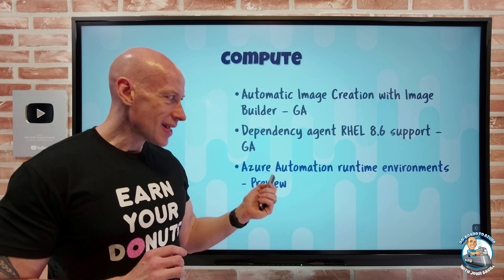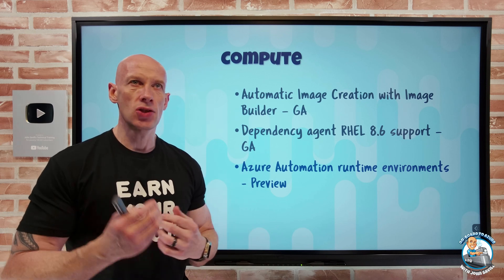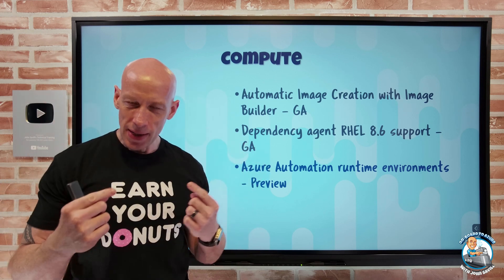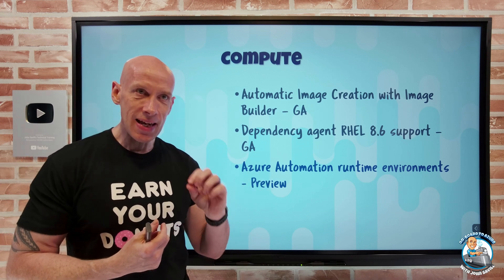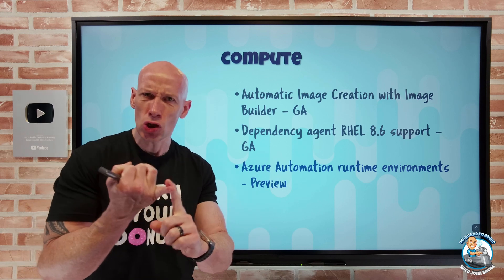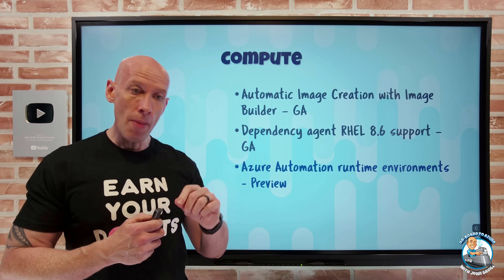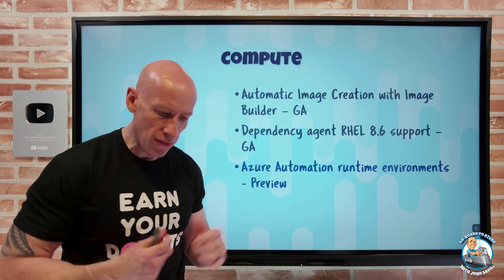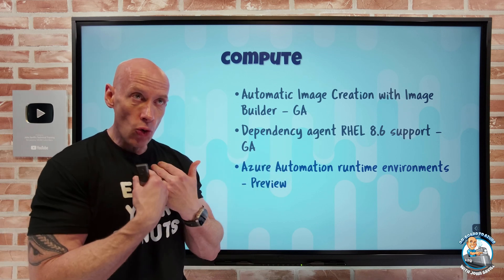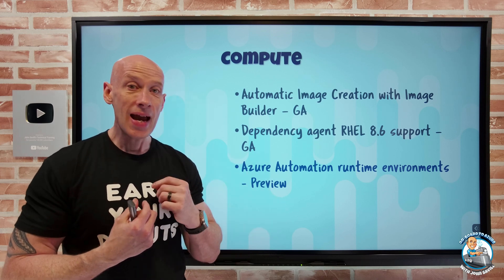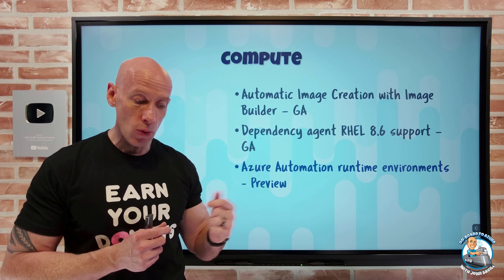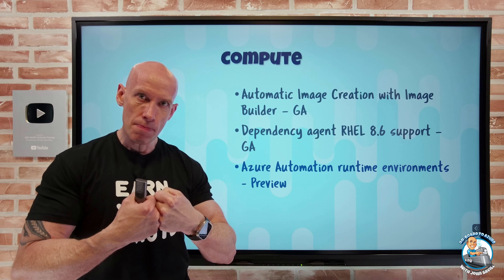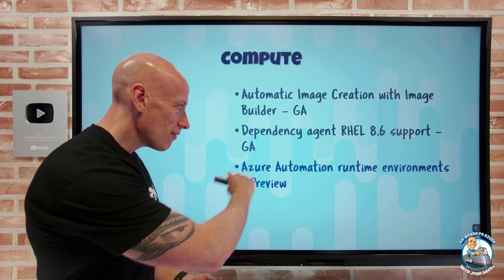Azure Automation has added runtime environments in preview. Ordinarily, my automation account has a certain set of extra things I can add, like modules, but individual runbooks may want different versions of those dependencies, which can clash. Now, each runbook has its own associated runtime environment. That runtime environment can select the language — PowerShell or Python — the runtime version, such as PowerShell 7.2 or particular Python versions, and packages required. With the PowerShell 7.2 runtime environment, you also get Azure CLI commands. Every runbook can now have its own defined runtime environment, curing those dependency clashes.